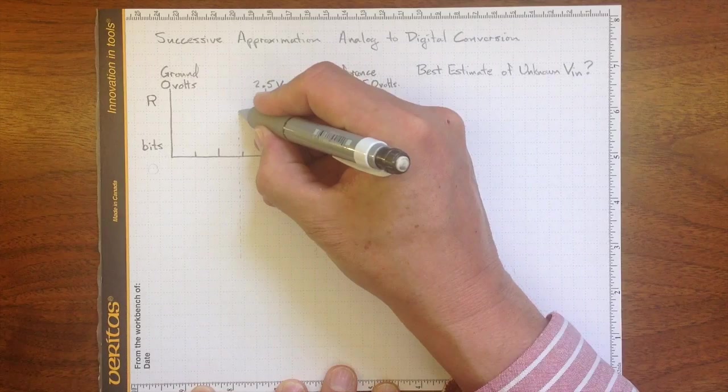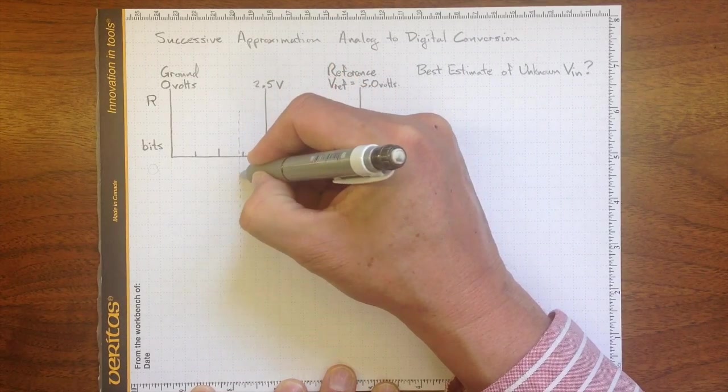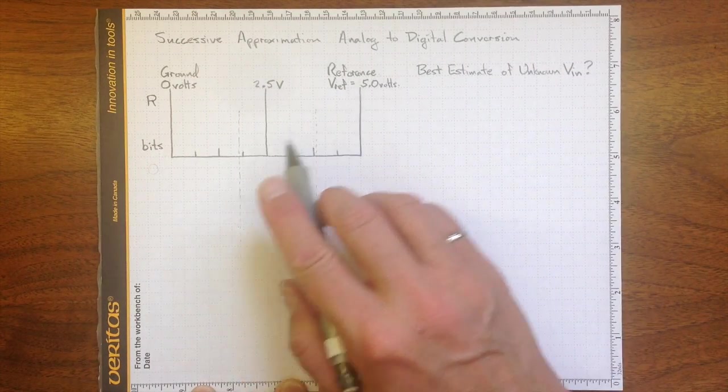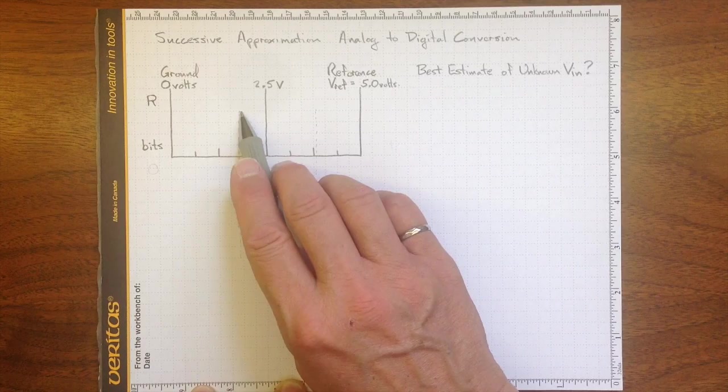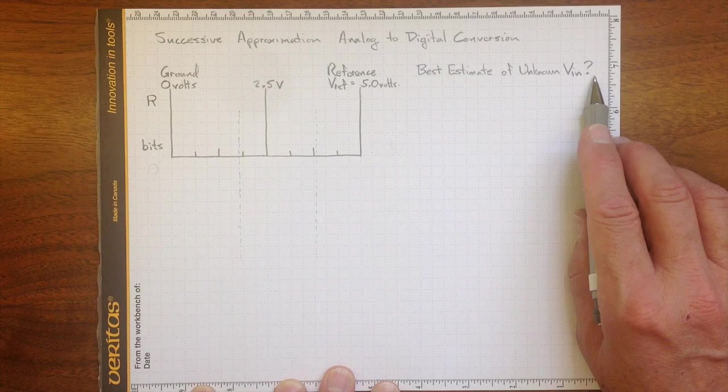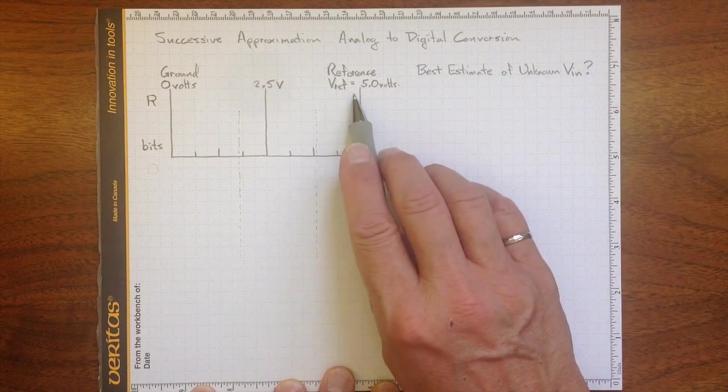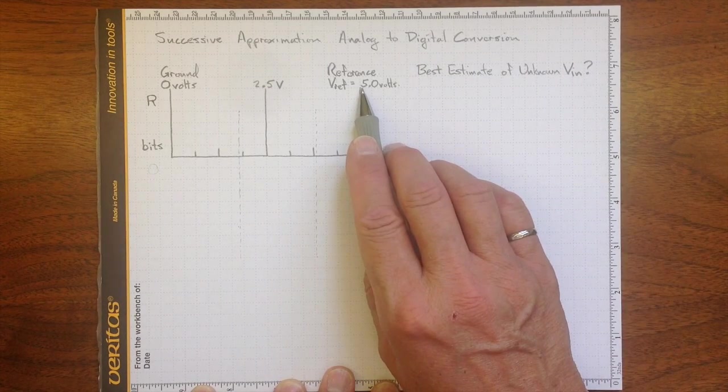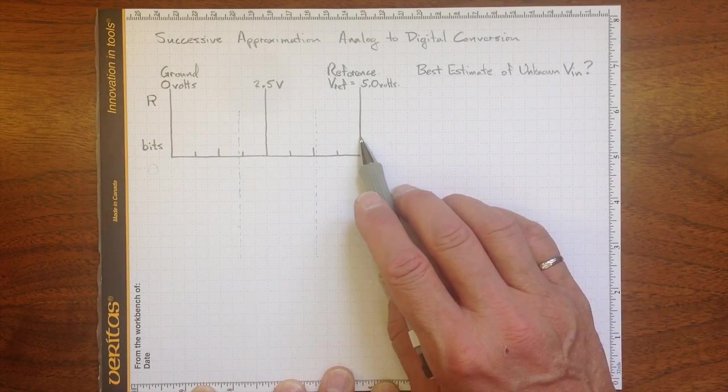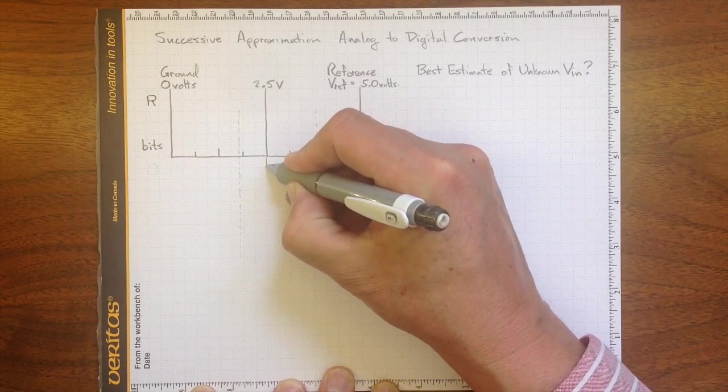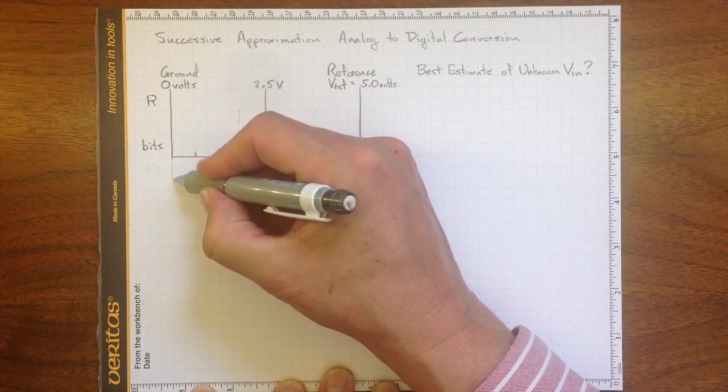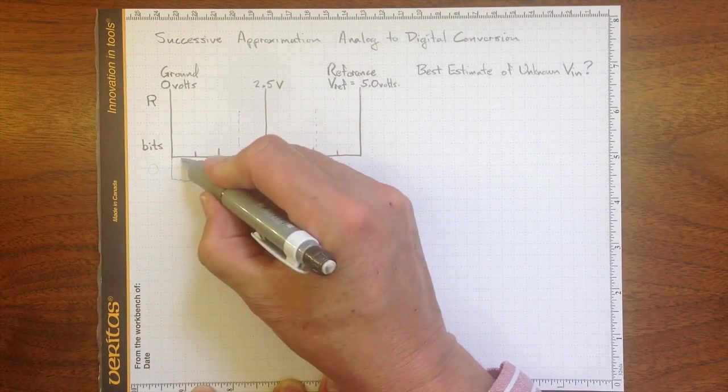Suppose we had an input voltage at this level here, somewhere between zero and our reference voltage of 5 volts. This looks like it's somewhere around 2 volts, but we don't know what that voltage is yet. We could figure out what that voltage is by comparing it to the reference voltage. Certainly it's less than the reference voltage, so we know it's less than 5 volts. Is it less than half the reference voltage? Yeah, it is less than half. So we know that it lies somewhere in this region here.